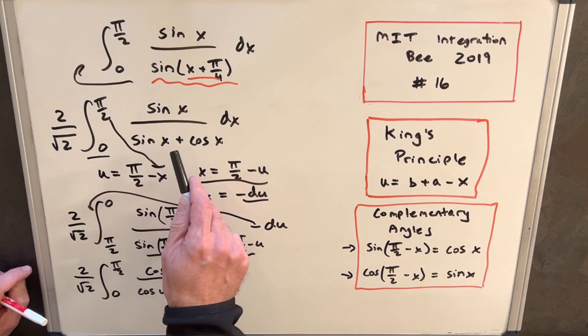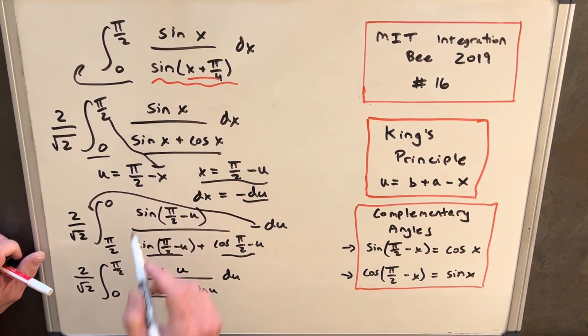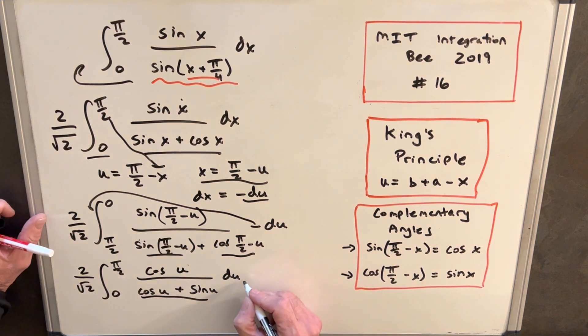And then the thing you notice now is if you just flip this order here and you change the variable from u to x, you have the exact same denominator that you have here. And then you have sine x, and this is going to be a cosine x.